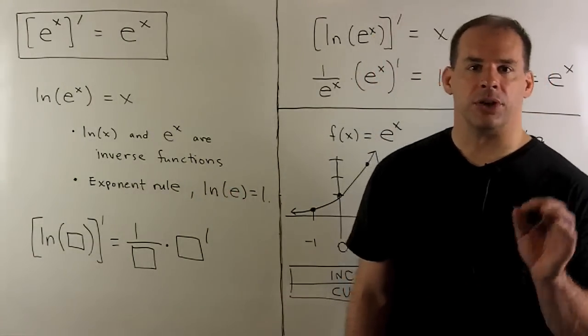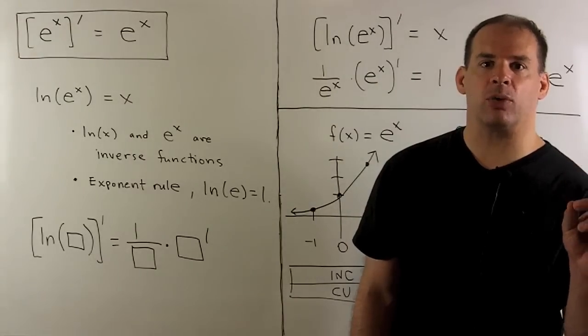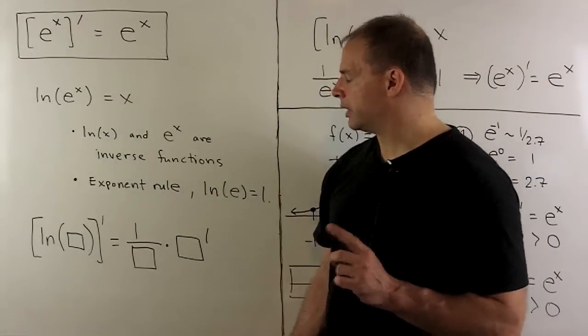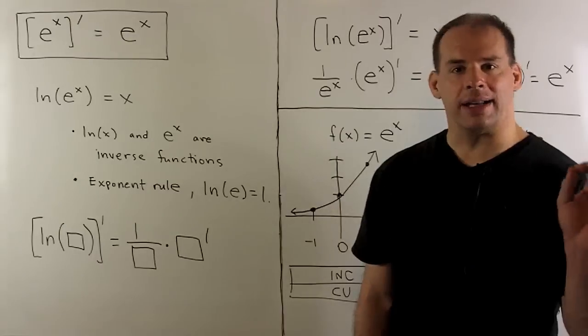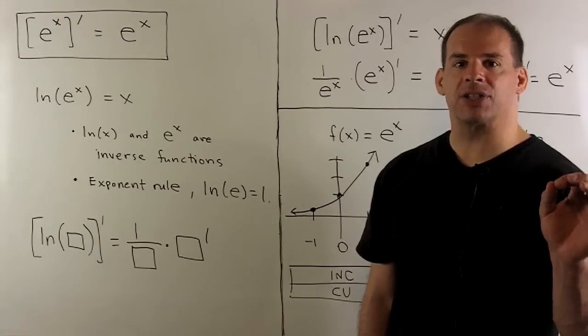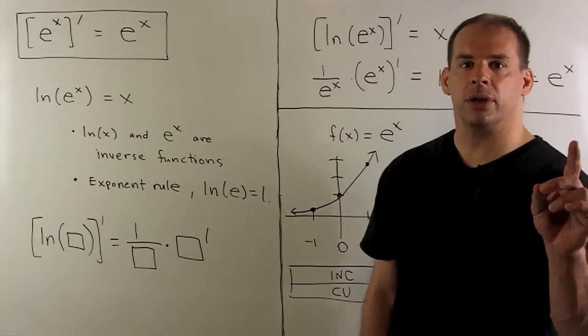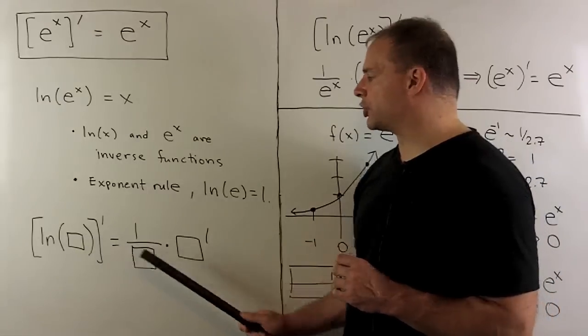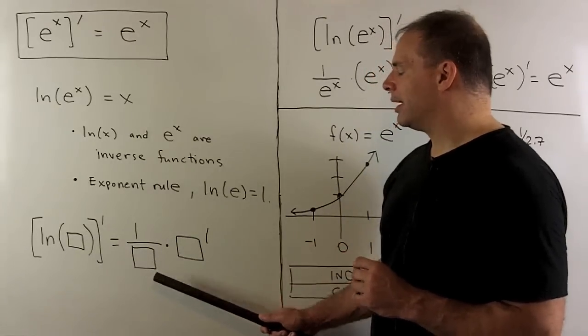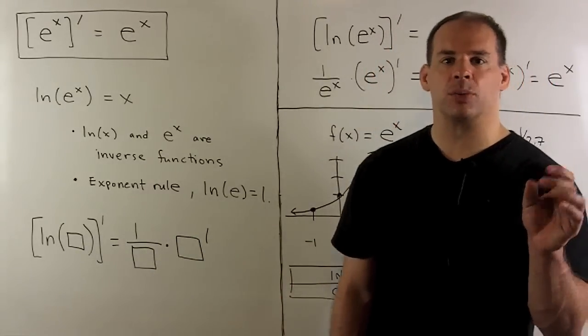Now, to get our result, we're just going to apply the chain rule to our composition here. So, if I take the derivative of natural log of box, the rule is we're going to take box, the inside function, flip it over, then we multiply by the derivative of box with respect to x.